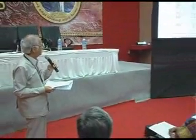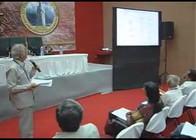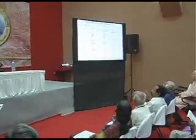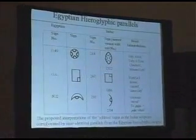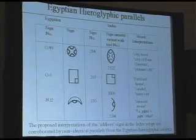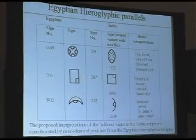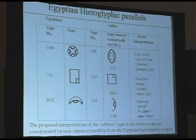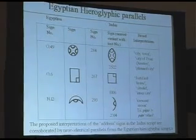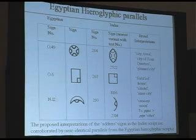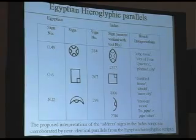By way of evidence, I give you the corroboration by near-identical parallels from the Egyptian script. The first Egyptian sign and the Indus sign are identical — both of them mean city. The second, the middle one, again the two are identical; in the Egyptian it stands for a house or a great house, and in the Indus script it stands for the fortified citadel. The third is the Egyptian sign for crescent moon alongside the Indus sign, where the Dravidian word for crescent moon is Pirae, from which I take the word Pirae and Purae.